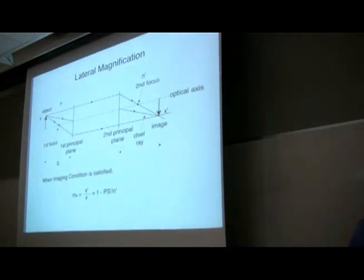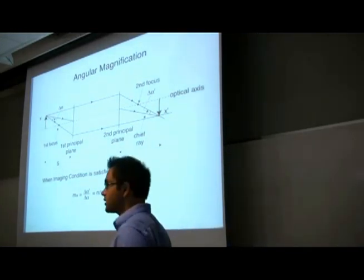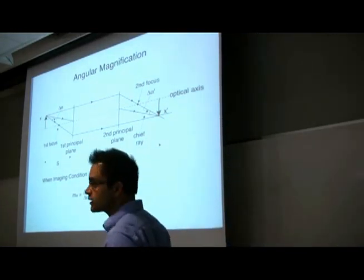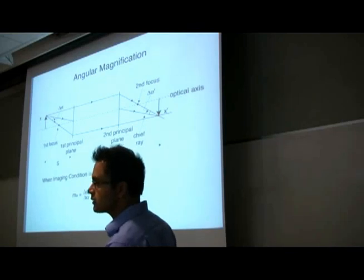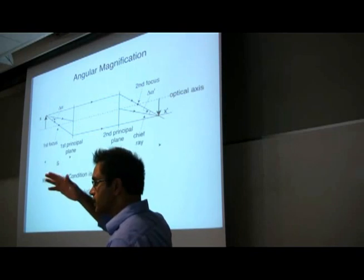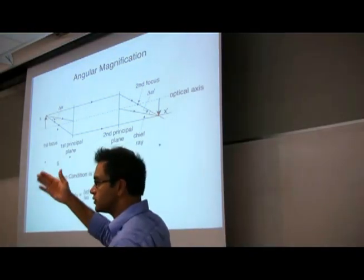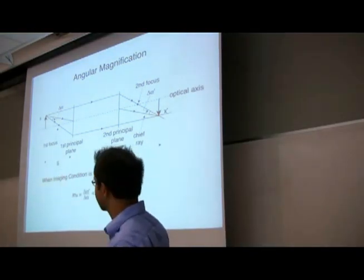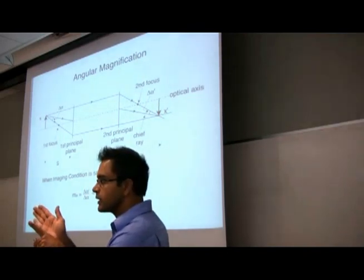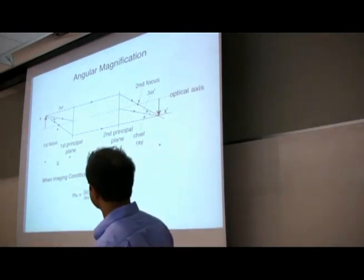The same thing happens when we have angular magnification, and we see this in the design of the telescope. Lateral magnification is useful for a microscope; angular magnification is useful for a telescope. If you're looking at stars far away, they're essentially points, and you're just trying to distinguish them coming in at a different angle — that's what angular magnification is.